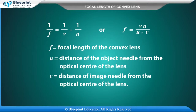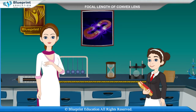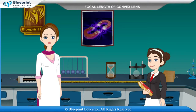Here, F is the focal length of the convex lens, U is the distance of the object needle from the optical center of the lens, and V is the distance of the image needle from the optical center of the lens. Let's do an experiment to find the focal length of a convex lens by plotting graphs between U and V or between 1/U and 1/V.